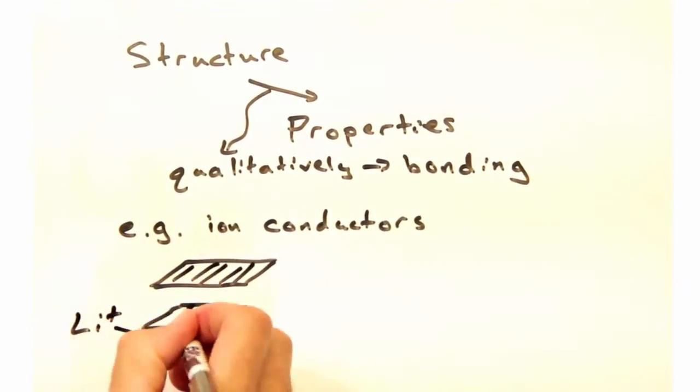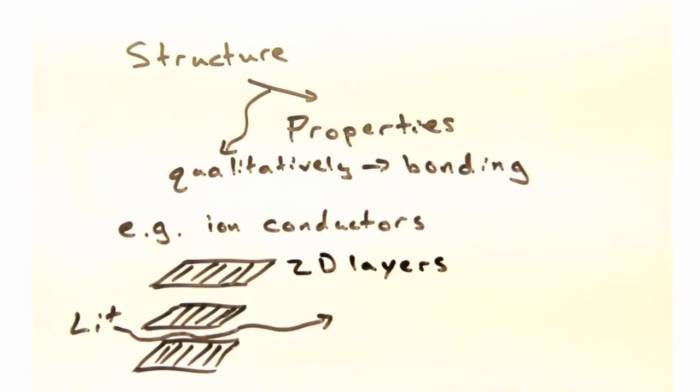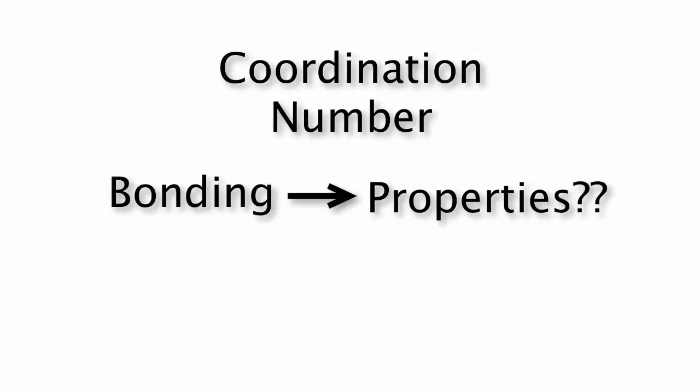For example, an ion conductor might exhibit channels or layers for ions to move in. So we use the coordination number as a qualitative descriptor to relate the bonding in a crystal to its properties? Indeed.